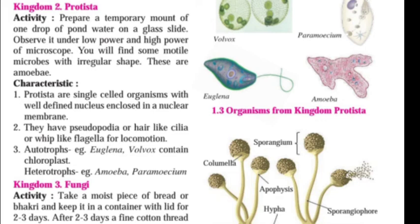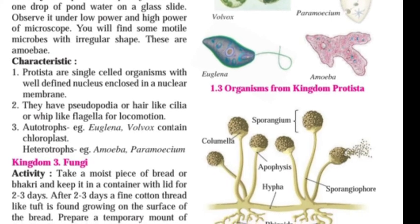The characteristics of Kingdom Protista are: they are single-celled organisms with a well-defined nucleus enclosed in a nuclear membrane. They have pseudopodia, hair-like cilia, or whip-like flagella for locomotion. Autotrophs such as Euglena and Volvox contain chloroplasts. Heterotrophs include Amoeba and Paramecium. These are examples of Kingdom Protista.